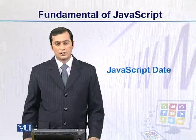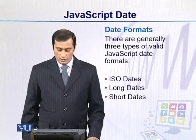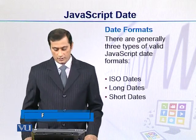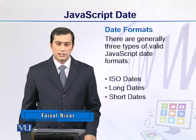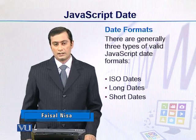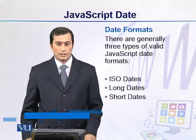Let's move further with the date object in JavaScript. There are generally three types of date formats which we use in JavaScript: ISO dates, long format, and short date format.